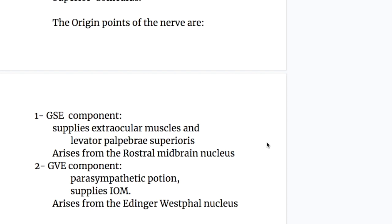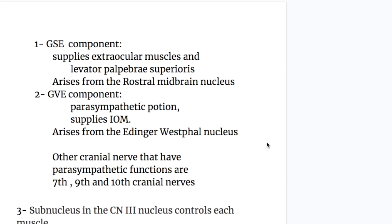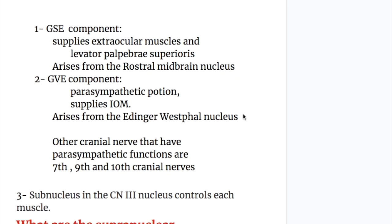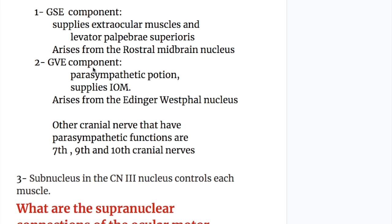The origin points of the nerve are: number one, the general somatic efferent component that supplies the extraocular muscles and the levator palpebrae superioris muscle, which arises from the rostral midbrain nucleus. Number two, the general visceral efferent component — the parasympathetic portion that supplies the intraocular muscles — arises from the Edinger-Westphal nucleus.